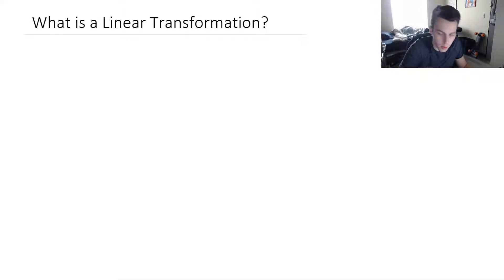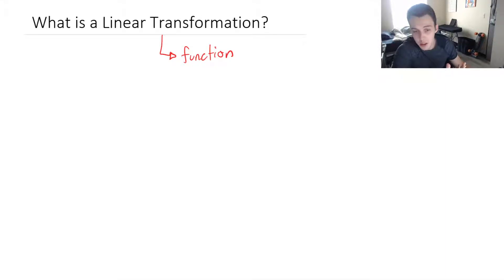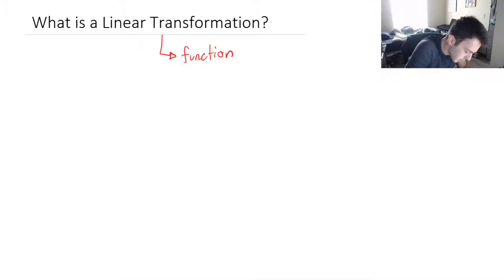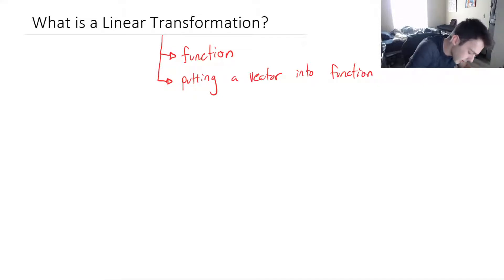So let's break this word up. When we think of transformation, we can think of it as a function — kind of like in calculus, where we have something we're inputting, like x in a function, and every x has a certain output that depends on how the function is defined, like f of x. For a linear transformation, our input is a vector — we're putting a vector into a function, and we're getting some kind of output, a new vector.